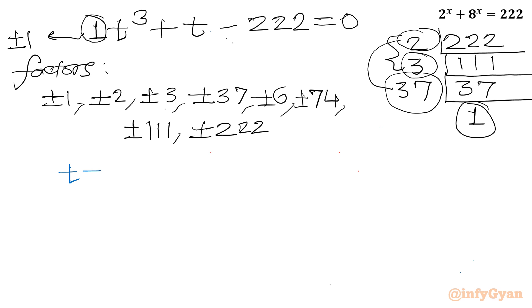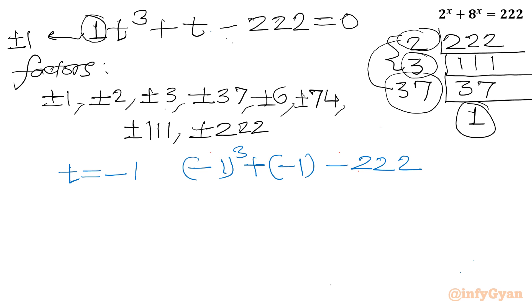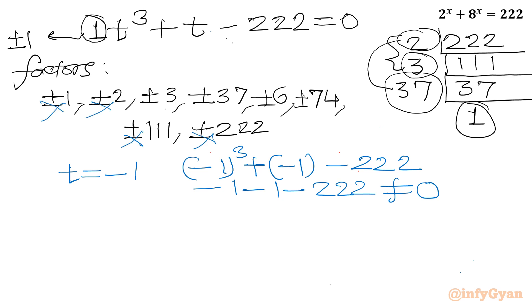If we pass the negative solution t = −1, we get (−1)³ + (−1) − 222 = −1 − 1 − 222. The sum of three negative numbers cannot be zero, so it won't satisfy the equation. We can remove all negative candidates from our list.